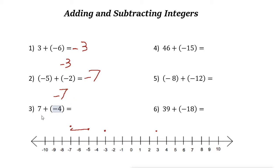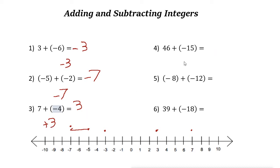Next example: 7 plus negative 4. On the number line, 7 is this point. Going 4 units to the left — 1, 2, 3, 4 — the answer is 3. You can also find the difference of 7 and 4, which is 3. The bigger number, 7, is positive, so the answer is positive 3. For positive numbers, we don't need to write the sign.